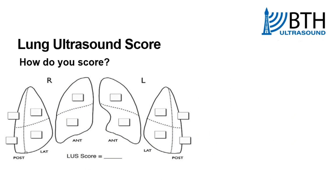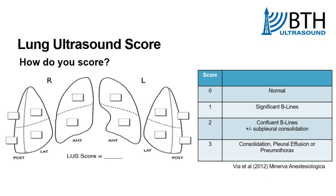How do you score? Normal aerated lung — so lung sliding with A lines or non-significant B lines — scores a zero. If you have significant B lines, which is three or more, scores a one. Confluent B lines scores a two.